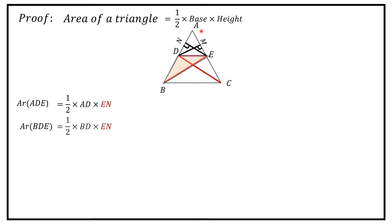Once again, area of triangle ADE, now base is AE. So area of triangle ADE is equal to half into AE into DM, which is the perpendicular height here.